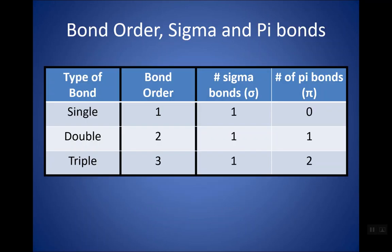Here is the same information in a chart. A single bond, bond order of one, is just a sigma bond. A double bond, bond order of two, is one sigma and one pi — one plus one equals two. A triple bond, bond order of three, has one sigma and two pi — two plus one is three.